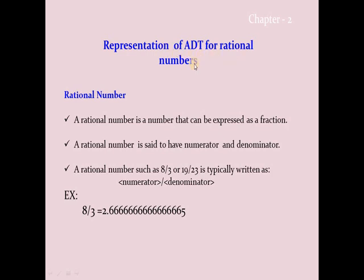Let's see the example of representation of abstract data type for rational numbers. Before defining the abstract data type we must know what a rational number is. A rational number is a fractional number — for example, 8/3 or 19/23. It will have a numerator and a denominator.